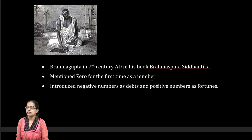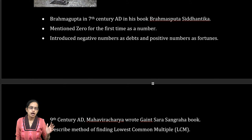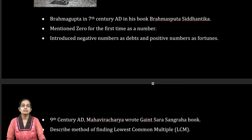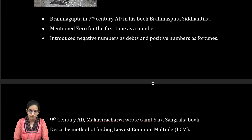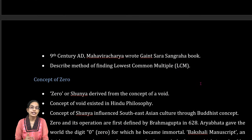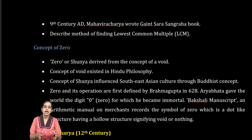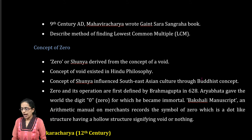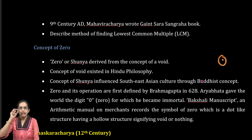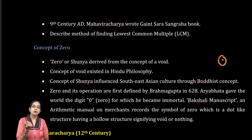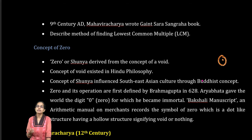The next important development was by Brahma Gupta, who for the first time talked about numbers in his work Brahmasphuta Siddhantika. Positive numbers were considered as fortunes and negative numbers as debts. He also discovered the method of finding LCM, the least common multiple. Regarding zero, there have been many debates — the Bakhshali manuscript mentions zero as a symbol with a dot or empty space. Brahma Gupta talked about operations of zero, while Aryabhat is considered to have given the digit zero.